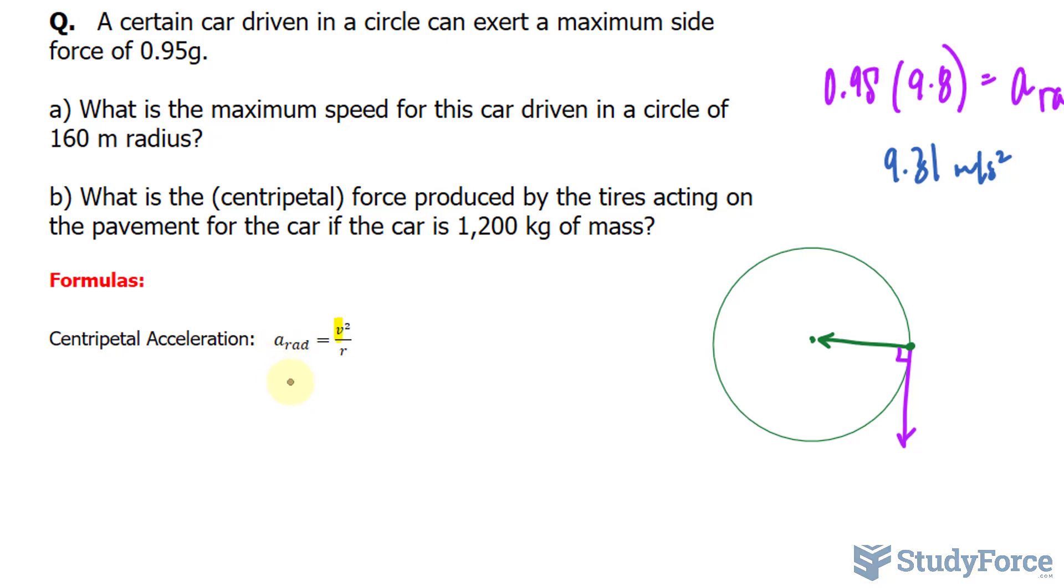So substituting what we know, we just found out a_rad. We have 9.31 equals v² over the radius given in the question as 160 meters.